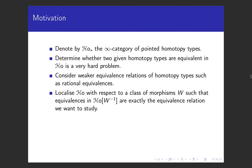One way to classify homotopy types with respect to an equivalence relation is to localize the category of homotopy types with respect to a class of morphisms, so that the equivalences in the resulting localization are exactly the equivalence relation we would like to study at the beginning.